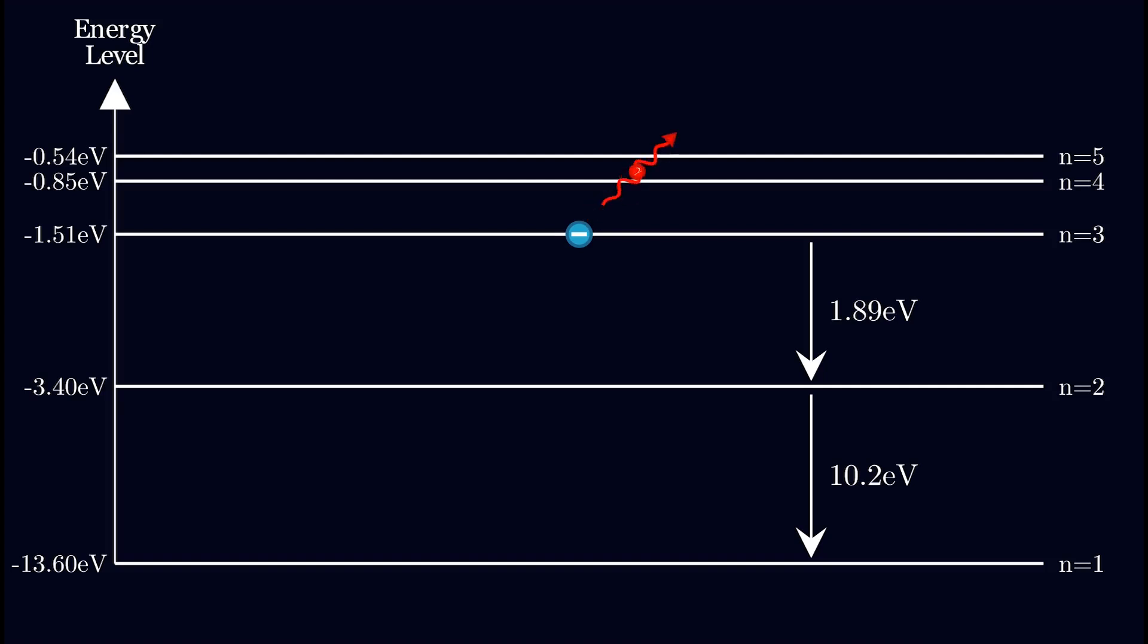The electron spontaneously de-excites and transfers 1.89 electron volts of energy to light by producing a red photon of 656 nanometers wavelength. We call this specific color of light hydrogen alpha.